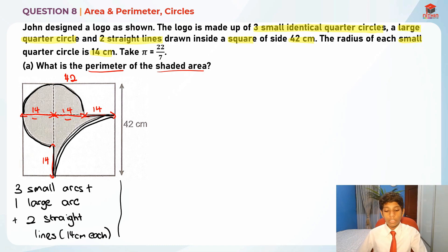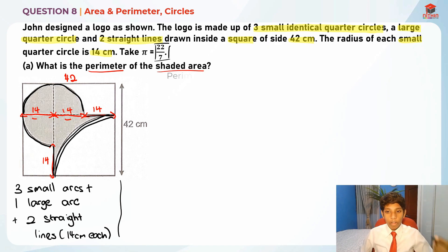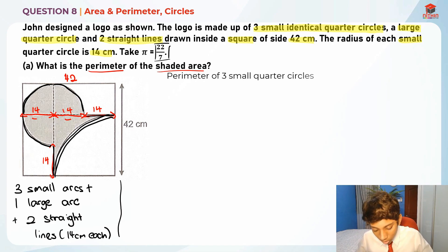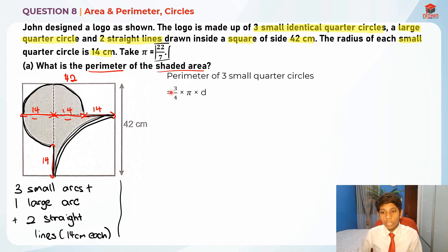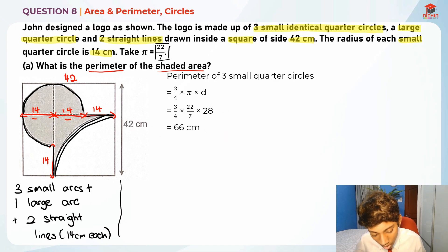Let's find the length of three small arcs. They tell us to take pi as 22/7. To find the three small arcs, we take 3/4 × π × d. Since pi × d is the formula for circumference, and each arc is only three-quarters of a circle, we take 3/4 × π × d. The diameter is 14 + 14 = 28. So: 3/4 × 22/7 × 28 = 66cm. Three arcs done.